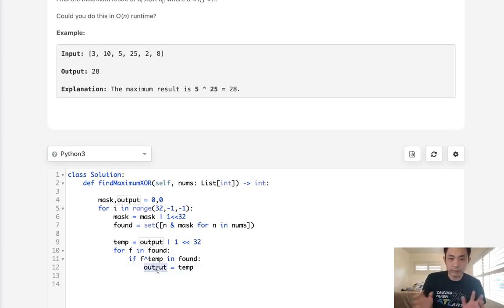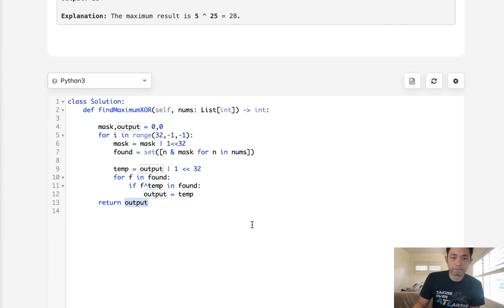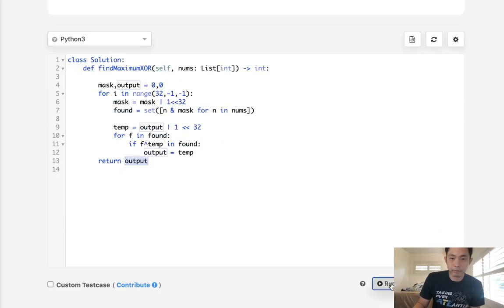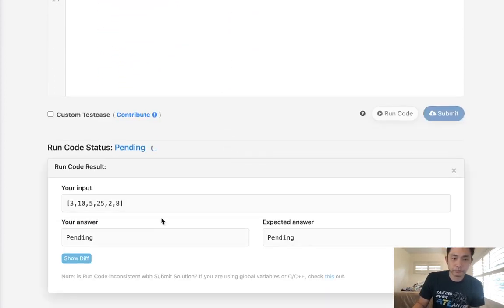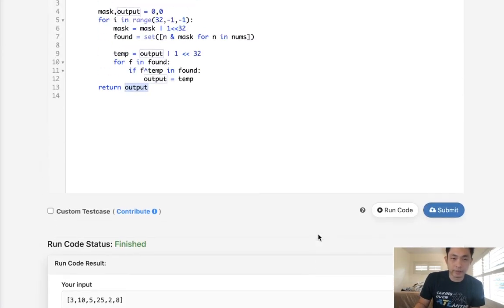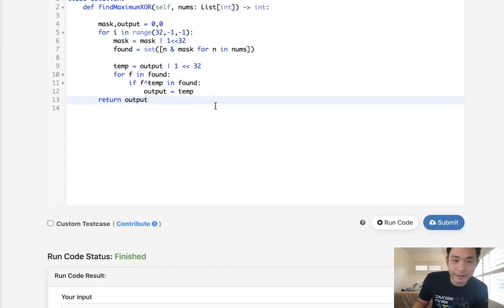And now we're just going to build up our output and finally return whatever maximum output we were able to create. So let me make sure this works. This should be 28. I got zero.